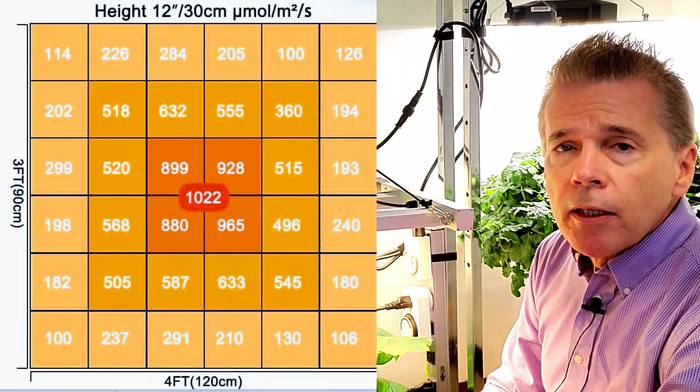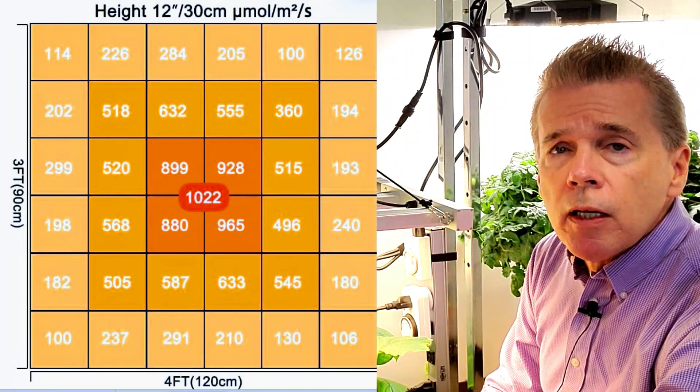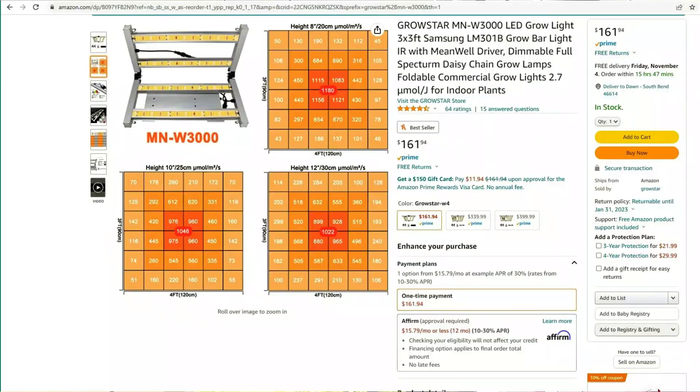Most grow lights have their light output measured in what's called a PPFD map. And if you're buying a light from a manufacturer, they should supply that. If you're buying a light off of a company such as Amazon, they should list that also. Be sure to look for it.